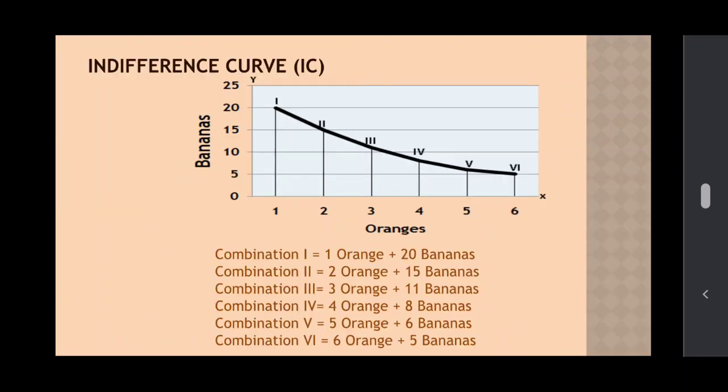Dear students, in the figure, combination first shows 1 orange plus 20 bananas; combination second shows 2 oranges plus 15 bananas; combination third shows 3 oranges plus 11 bananas; combination fourth shows 4 oranges plus 8 bananas; combination fifth shows 5 oranges and 6 bananas; combination sixth shows 6 oranges and 5 bananas. All these combinations are shown in the figure. All the combinations — 1st, 2nd, 3rd, 4th, 5th, 6th — give equal level of satisfaction to the consumer, and the indifference curve is sloping downward from left to right.